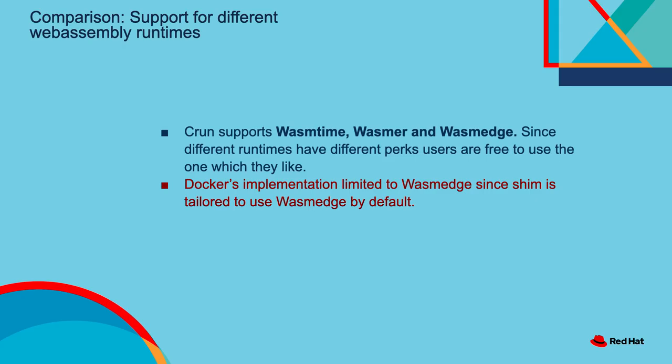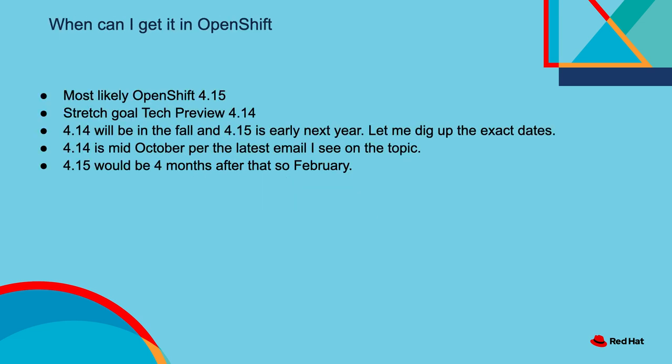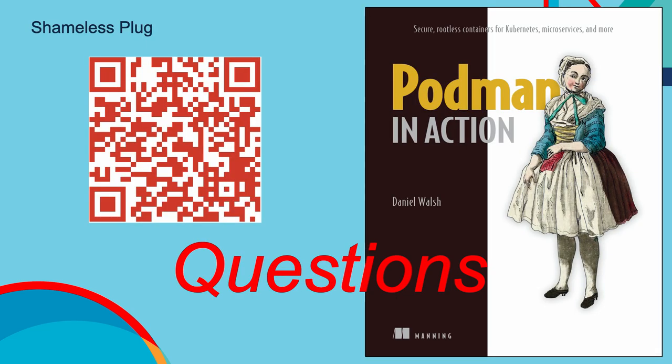Treat all containers in your system — whether they're WASM, traditional containers, or Kata containers — as locked down as possible with defense in depth. The big question is when can you get access to this with OpenShift. The most likely time this is going to be available is OpenShift 4.15, with a stretch goal of 4.14. OpenShift 4.14 is planned for October, and 4.15 will be about four months later — so we're looking at next February. That's my quick presentation.